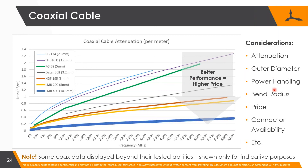Power handling matters - the thicker cables are better if you have high power transmitters, though often not the case in cellular and Wi-Fi. Bend radius is important and defined for each cable; typically the thinner ones you can bend sharper than the fatter ones, which is useful in an enclosure. Also consider price, and then an important one: connector availability.